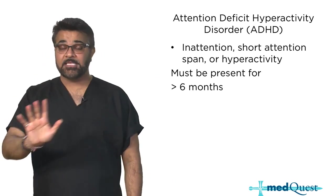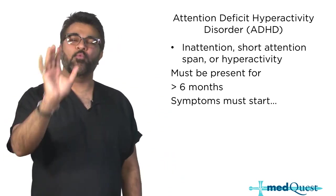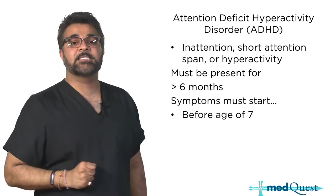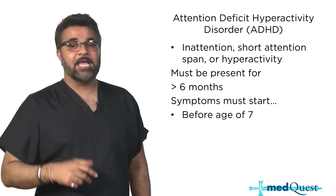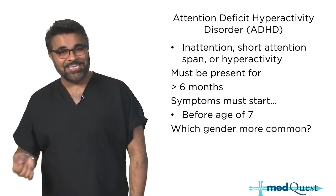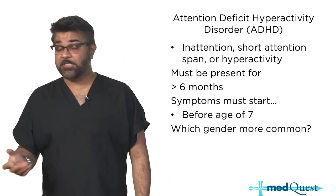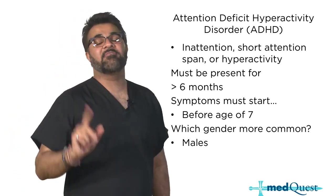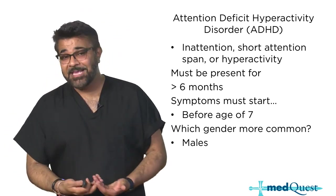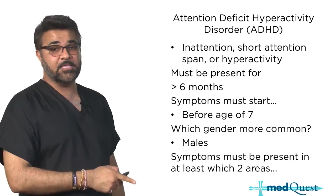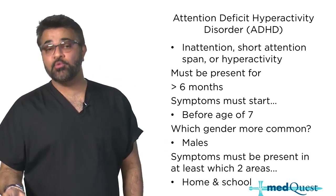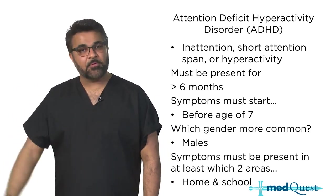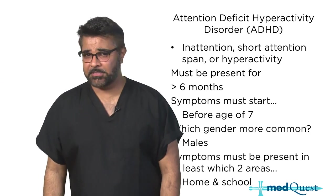The ADHD symptoms have to be present for six months before the age of seven. If they ask which gender ADHD is more common in, the answer is the male population. The symptoms have to be present in at least two areas of life - most commonly in the child's home and in their schooling. The parents have to notice short attention spans and hyperactivity, and the teachers will definitely notice it.